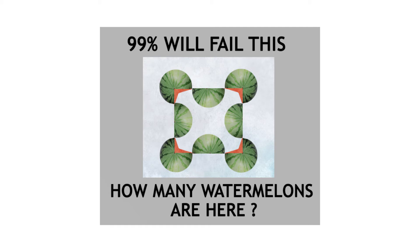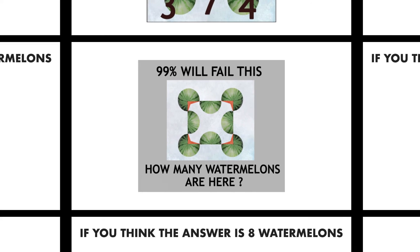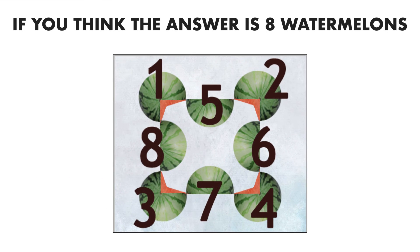Let me explain the solution now. Here are the three most popular answers. If you think the answer is 8 watermelons, some people have pointed out that the meme asks how many watermelons you see, not how many whole watermelons. This logic has led some people to suggest the only possible answer is 8, consisting of 4 halves and 4 three-quarter melons. It has been noted that the meme doesn't state that partial melons need to be added together. Thus, 8 watermelons could be the answer.